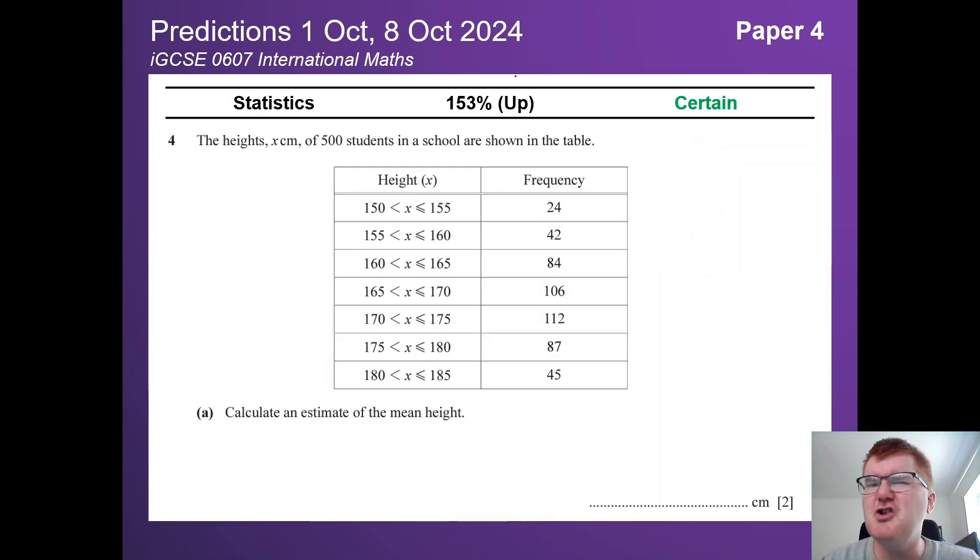Statistics, huge here at 153%. This is no surprise, it can feature a lot of different style of questions. Estimate of mean has always been quite popular. Remember, you need your calculator for this, which is why it's only two marks here. But they could ask you a cumulative frequency question. That's very common too.